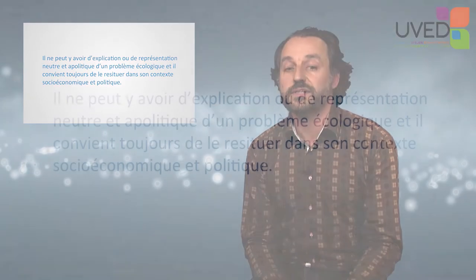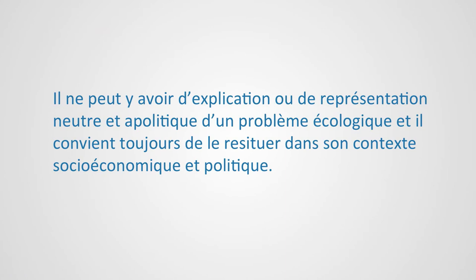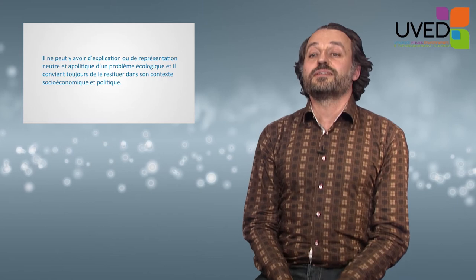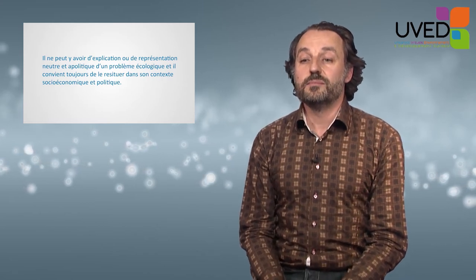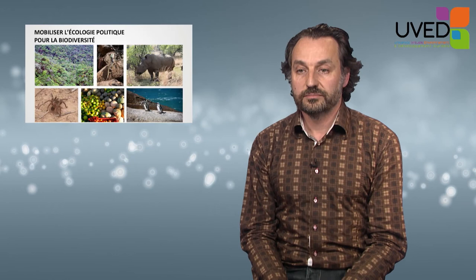We always come back to the basis of political ecology: there may be no neutral, apolitical explanation or representation of an ecological problem. The problem should always be located in its socioeconomic and political context. Now that we have the framework, let us consider how we can best use it to work on problems connected with the loss of biodiversity.